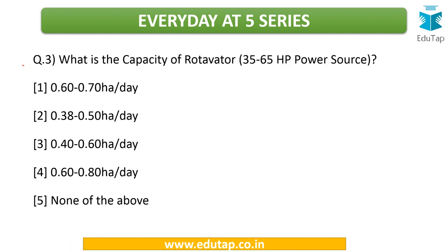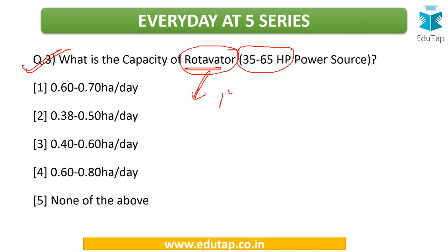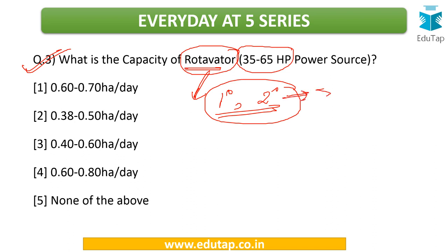The third question is: what is the capacity of a rotavator in case the power source is 35 to 65 horsepower? You need to tell me the field capacity. The options are quite close, so you need to be very specific. We were also discussing previously that a rotavator is an implement used in both primary and secondary tillage operations, which is why we are going into detail on its various parameters.